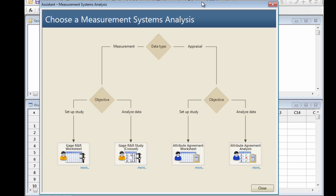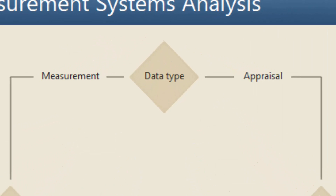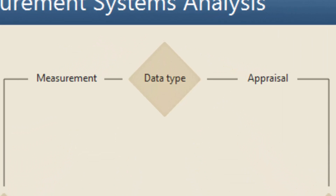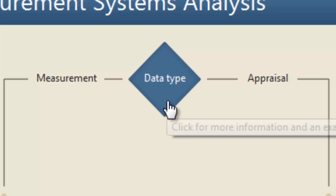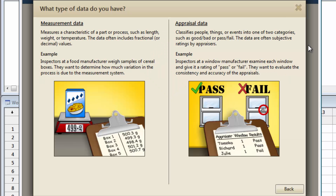They'll be evaluating the spiciness of soup. First, we need to plan how to gather our data. An MSA could use either measurement or appraisal data. Clicking the Data diamond brings up examples that make it easy to confirm we need appraisal data.